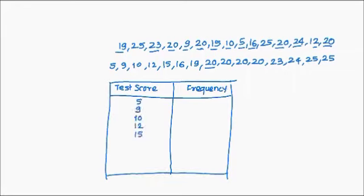Frequency chart looks like this. For score 5, we have 1 student, 9 we have 1, 10 we also have 1, 12 1, 15 1, 16 1, 19 1. For score 20, we have 4 students, 23 1, 24 1, and for 25 we have 2 students.